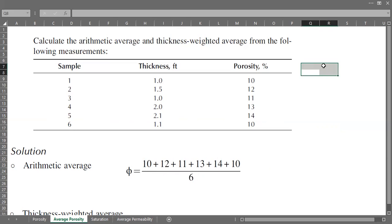I'll make my own table with thickness in feet and porosity in percent: 1.0, 1.5, 1.0, 2.0, 2.1, 1.1. These must be core samples because the thickness is very short.